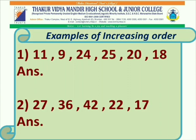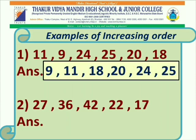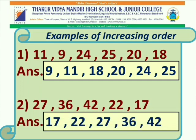Here we have two sets of numbers. In the first set, we have numbers 11, 9, 24, 25, 20, 18. When we arrange these numbers in an increasing order, it will be 9, 11, 18, 20, 24, and 25. In set 2, we have numbers 27, 36, 42, 22, 17. After arranging this set in an increasing order, we have 17, 22, 27, 36, and 42.